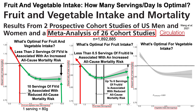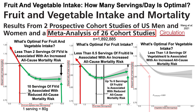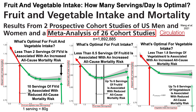For vegetable intake, again all-cause mortality risk is on the y-axis plotted against vegetable intake in servings per day on the x-axis. For people who consume less than 1.8 servings of vegetables per day, that was associated with an increased all-cause mortality risk. For greater than 1.8 servings per day, we see a significantly reduced all-cause mortality risk, all the way up to eight servings of vegetables per day.